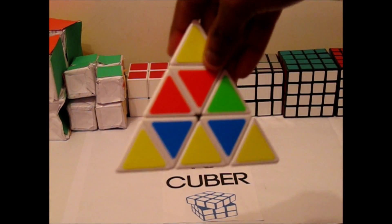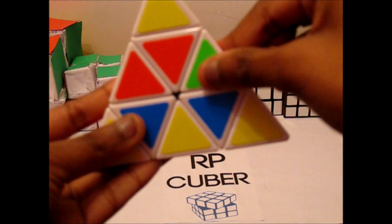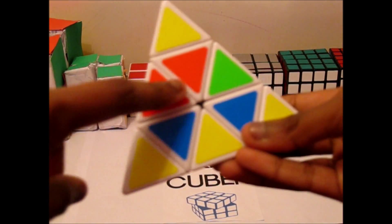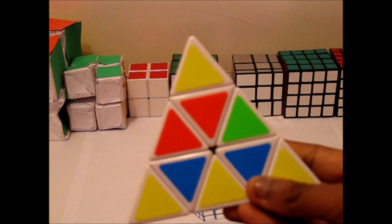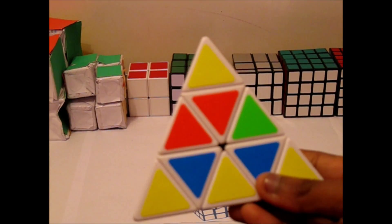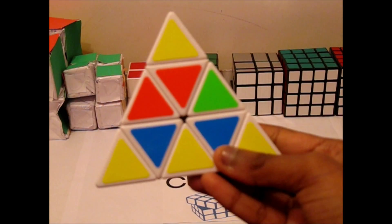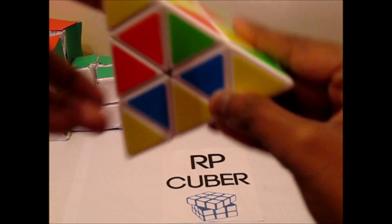So now it's to get the centers matched. So the centers consist of this middle piece, this piece, and this piece. These are considered as edges because they have two colors on them. So in order to get the centers, there's no specific algorithm, but it's really easy.